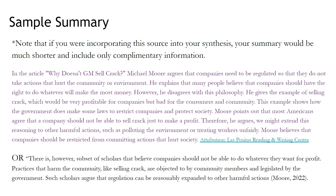So this summary from a much longer article clearly states the thesis of the original author, hones in on the key example the author uses to advance his point, and then ends by answering an implicit 'so what' question — why did the author make these claims? Because the entire point of the piece was that he believes companies should be restricted from committing actions that hurt society.